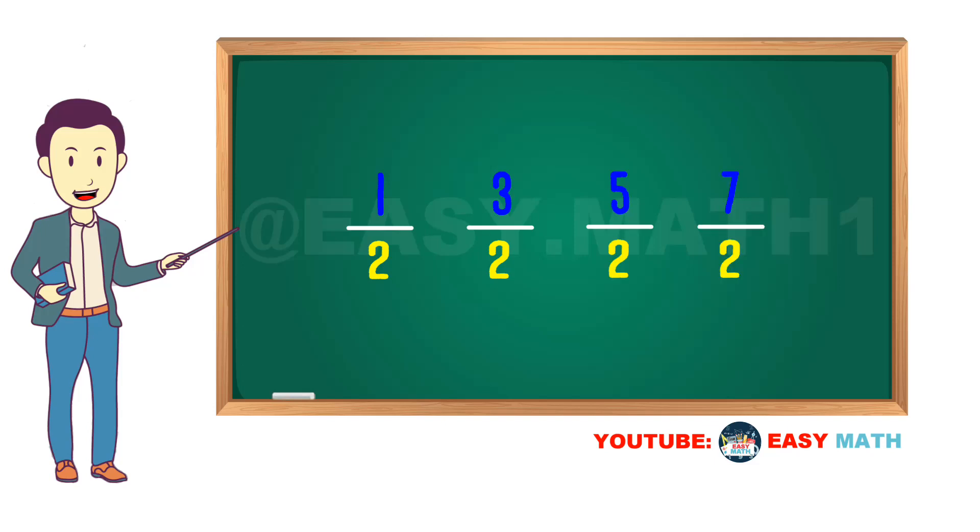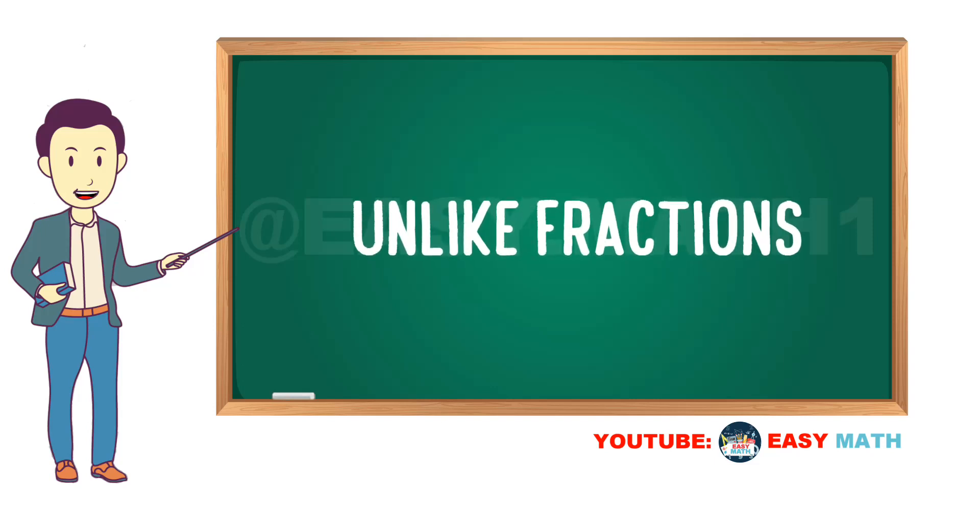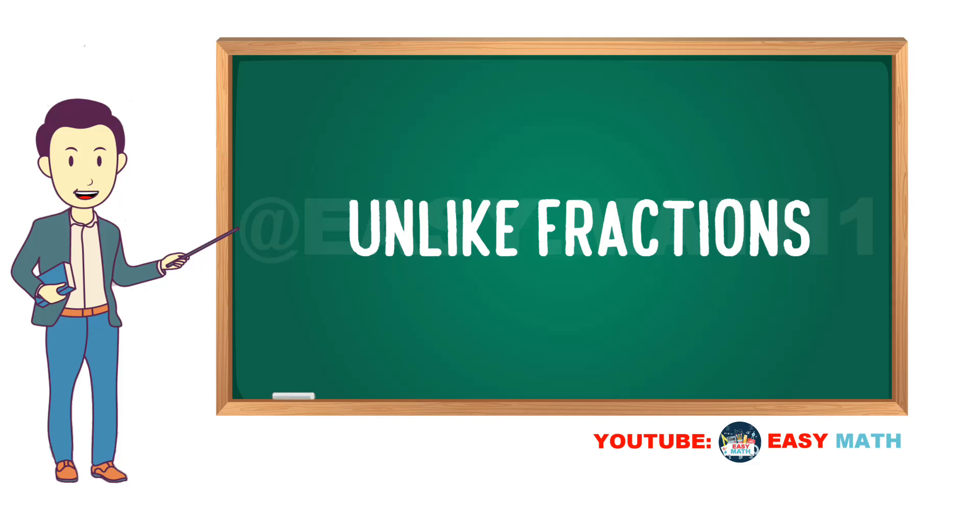The fractions with unequal denominators or different denominators are called unlike fractions, such as one half, one third, one quarter, one fifth.